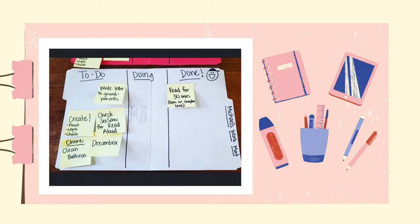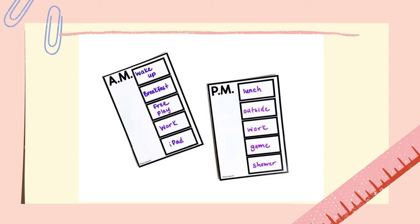In this example, each priority task is written on post-it notes. Each day you can have a brief discussion with your child about what must be done. With the exception of attending a virtual class, your child can manage the folder themselves and choose the order in which they do tasks. The next image uses the same level of flexibility but uses laminated cards with dry erase pins. If you have access to these materials, you might find this to be the best approach for your family.